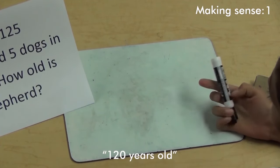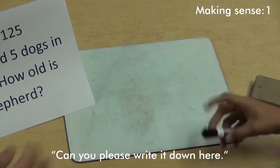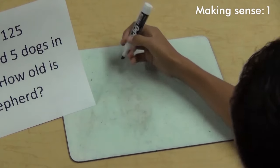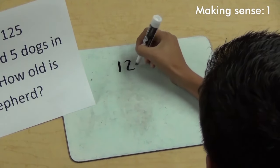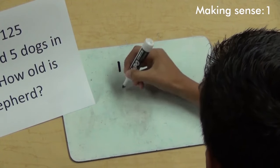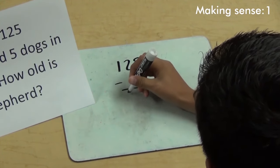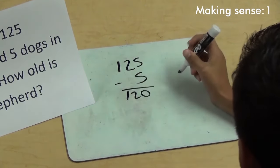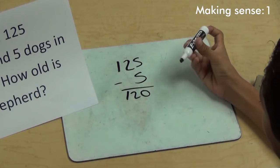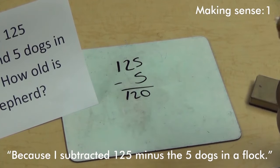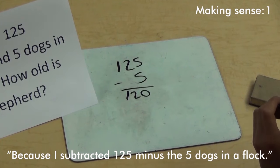120 years old. How do you know it's 120? Can you please write down here? Now how do you know that the shepherd is 120 years old? I'm going to subtract 125 minus the five dogs in a flock.